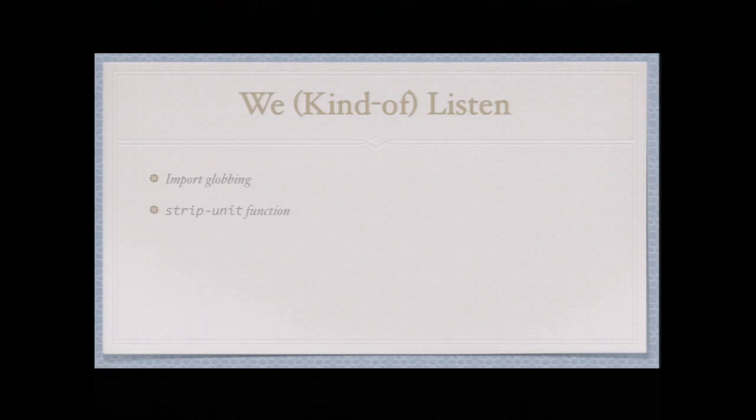One feature that gets suggested probably several times a year is input globbing — the ability to say, go to this directory and load in all these Sass files. That feature really breaks down when you start worrying about how the cascade is going to work. You get really subtle bugs when you add a new stylesheet and you don't get to control the order in which the files come in. People end up scratching their heads wondering why something broke on another page, just because globbing picked it up and gave it an order they didn't expect.